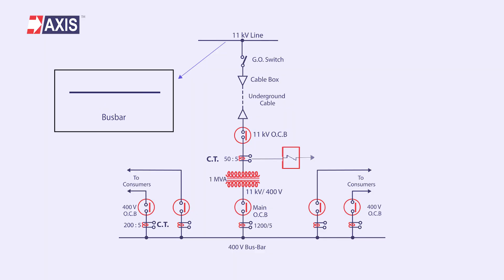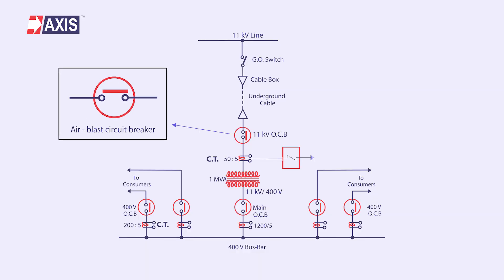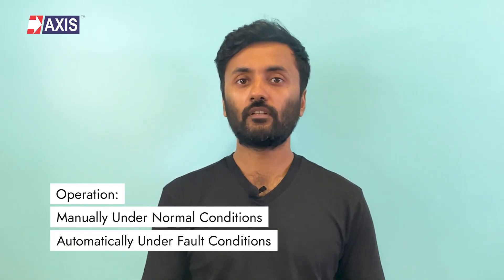Secondly, the bus bar. A bus bar is an assembly of bus conductors with associated connection joints and insulating supports. Thirdly, the circuit breaker — a circuit component that can open or close a circuit under normal and fault conditions. It is designed to be operated manually under normal conditions and automatically under fault conditions. It is a special type of switching device which can be operated safely under huge current carrying conditions, used for timely disconnecting and reconnecting different parts of the power system for protection and control.